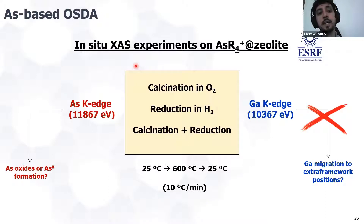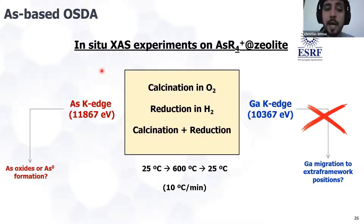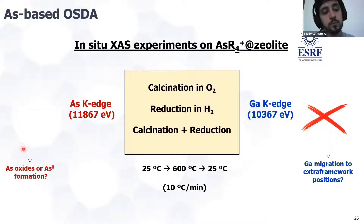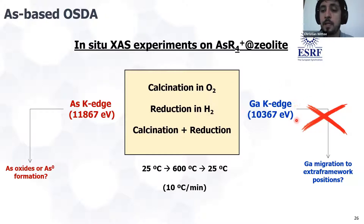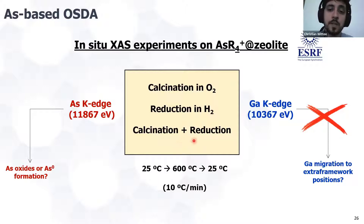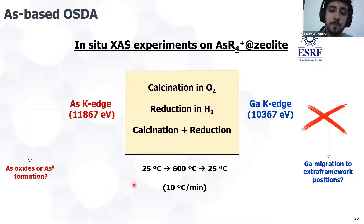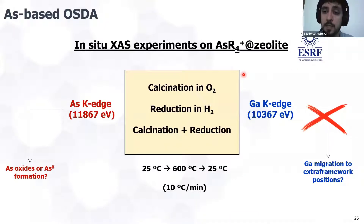The calcination experiments of the OSDA present within the zeolite were performed at the arsenic K-edge to evaluate whether at the end of calcination we would form arsenic oxides, arsenic zero, or any other arsenic species. We also studied the gallium K-edge, but due to time constraints I will focus only on the arsenic K-edge. The samples were calcined in oxygen, reduced in hydrogen, and calcined and reduced subsequently using a specific temperature profile. The experiments were performed at ELISA, the beamline of the SRF synchrotron.